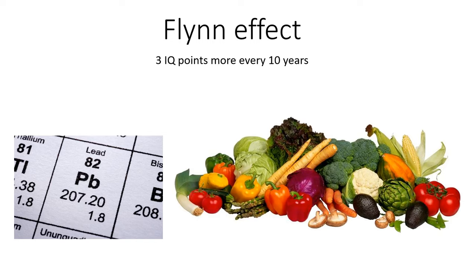We also have the Flynn effect. It was known before Flynn but he made it popular, so we call it the Flynn effect. It's that IQ grows 3 points on average every 10 years in a population. In the USA there's been a growth of 3 IQ points every 10 years. So if the average was 100 ten years ago, today the average IQ would be 103. Unless something changed — like immigration or lead in the environment. We adjust the IQ test so the average is always 100 — when it reaches 103, we change the test.